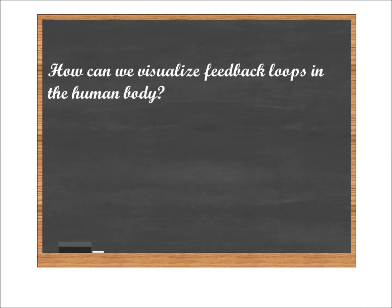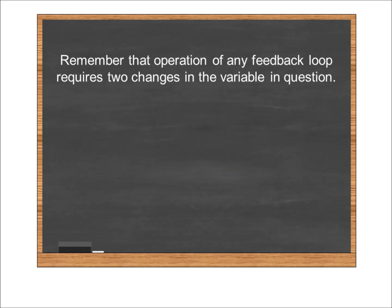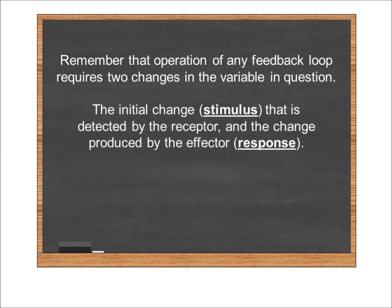Before we start visualizing, I need you to remember a couple of things. First of all, remember that every feedback loop, when it's in operation, is going to be dealing with two changes in the variable in question. There's going to be the initial change that activates it — the change caused by the external environment or by some other factor within the body — and that initial change is called the stimulus. Then the feedback loop is going to produce a change in that variable, and that's called the response.